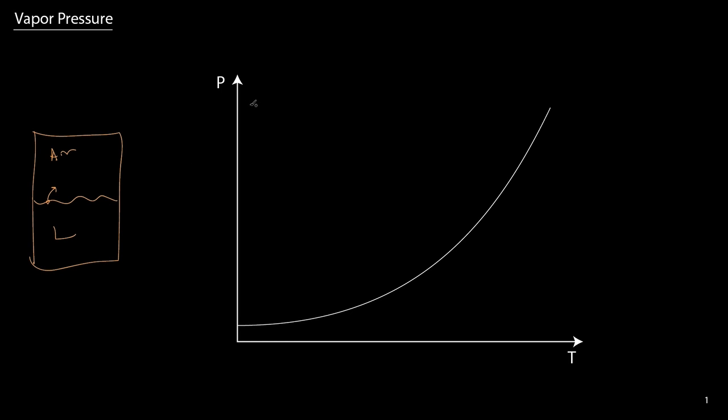If we were to look at a PT diagram, at low temperatures and high pressures, we would have everything exist in the liquid phase, and this is for a single component. At low pressures or high temperatures, we have a vapor or a gas. This curve that I've drawn here, this is the vapor pressure.